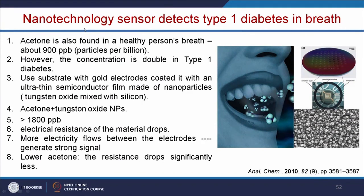Nanotechnology sensors can also detect type 1 diabetes through breath analysis. Acetone is usually found in a healthy person's breath at approximately 900 ppb, but the concentration is double in type 1 diabetic patients. A substrate with gold electrodes coated with an ultrathin semiconductor film made of nanoparticles — tungsten oxide mixed with silicon — is mainly used. In the presence of acetone, the electrical resistance of the material drops. Depending on the electrical resistance, we can easily detect diabetes in the breath of a person. Based on this electrical resistance-based breath sensor, we can identify a person with type 1 diabetes.